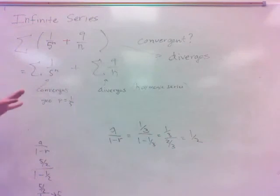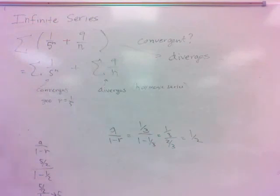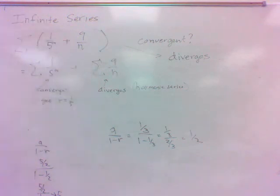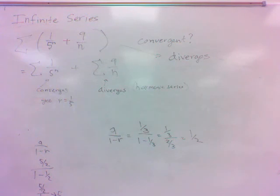If you're adding two series together and one of them is divergent, then the whole thing is going to diverge. Because that goes to infinity — even though the other goes to a number — the divergent one will by all means trump it.